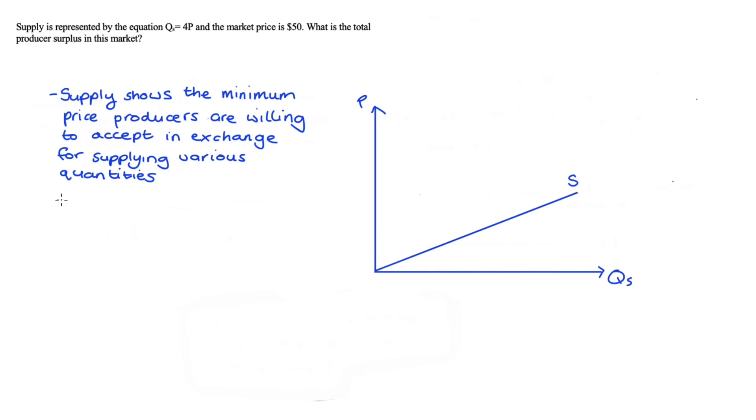That's because our supply curve shows the minimum price that producers are willing to accept in exchange for various quantities. And that minimum price is just going to be equal to their cost of production, i.e. it's going to be equal to marginal cost.